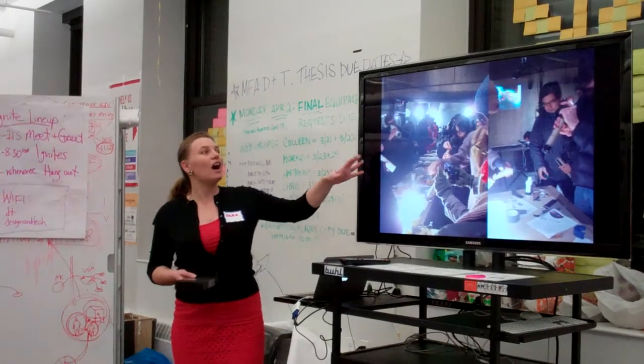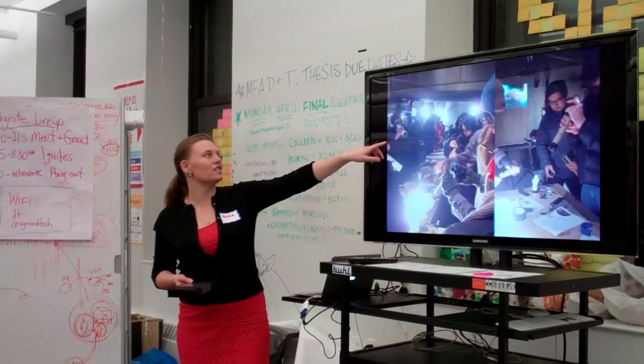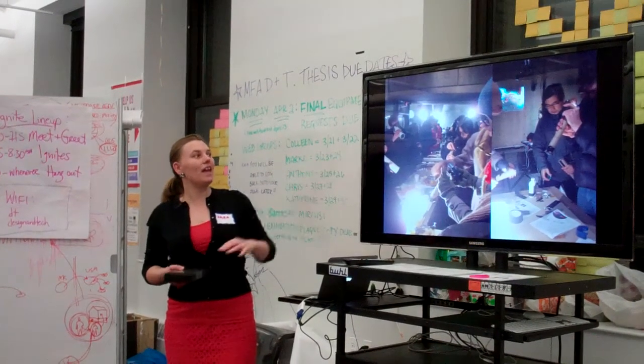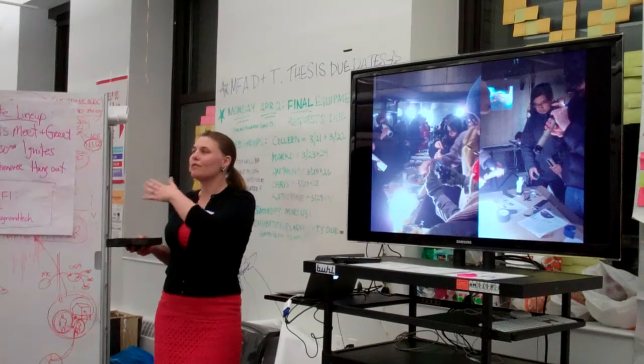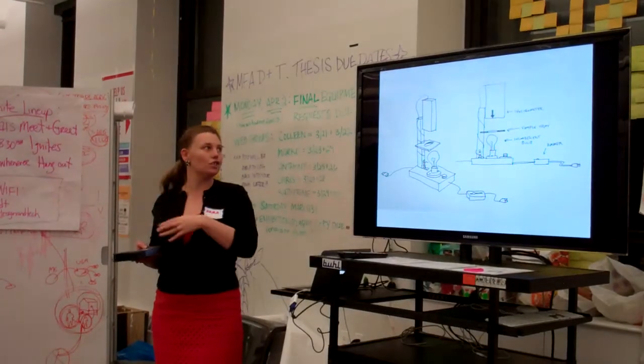We've been coming up with other versions of spectrometers. This is just a tube with a slit cut in the end and a broken piece of CD. You can take a photograph of the spectra that's cast inside of the tube.